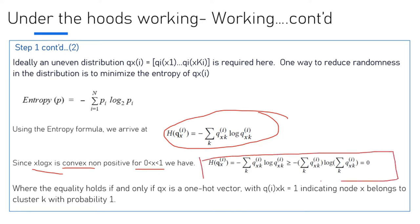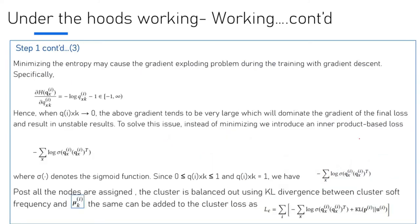If this equation's equality holds, then Q_X, which is a one-hot vector, Q_I(X) has to equal one. This indicates that it belongs to cluster Q with probability of one. So this becomes our starting equation for cluster assignment probability. But the story doesn't end there. You have an equation to work with, but minimizing the entropy will result in a gradient exploding problem during training.